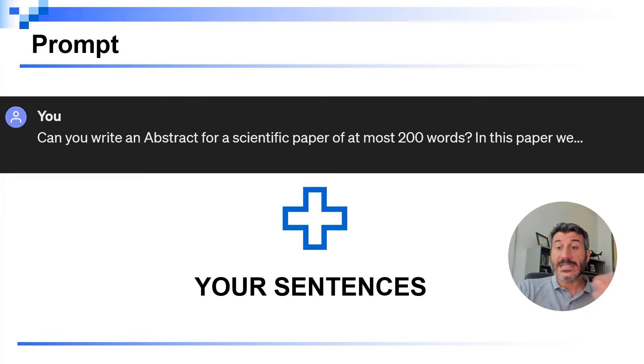Then, you can easily design your prompt by asking ChatGPT to write an abstract of a scientific paper, of no more, let's say, 200 words, in case you have a space limitation. And then, you say, in this paper, we, and you attach all the sentences that you have written before in bullet form list.